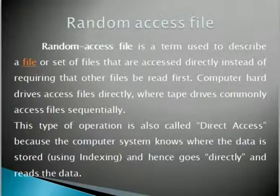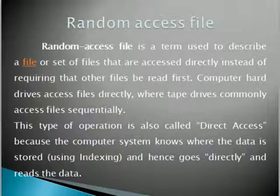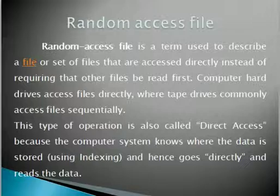A random access file is one where we can access the file directly. It is also known as direct access, because our system knows where the data is stored, so it goes directly and reads the data. That is why we call it a random access file.